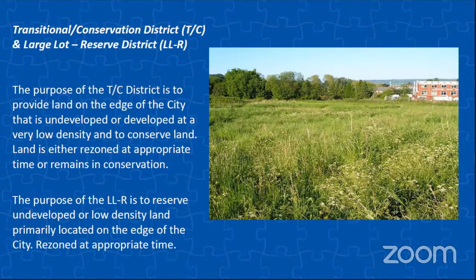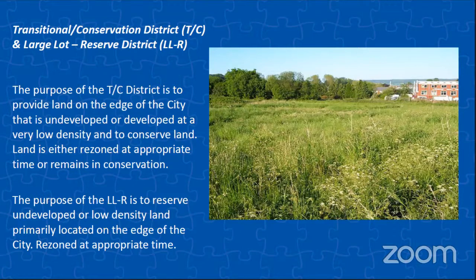To start off, we have our transitional conservation district as well as our large lot reserve district. The purpose of the TC district is to provide land on the edge of the city that is undeveloped or developed at a very low density and to conserve land — this land is either rezoned at the appropriate time or it remains in conservation, such as wetlands. The LLR reserves undeveloped or low density land located on the edge of the city that will be rezoned at the appropriate time to a residential district that correlates with a planned development.